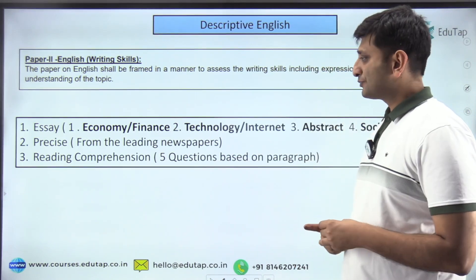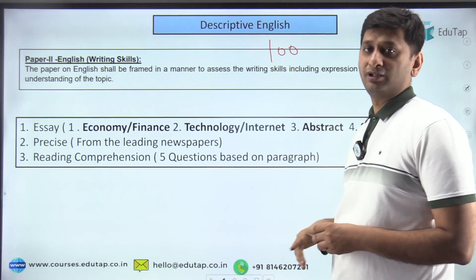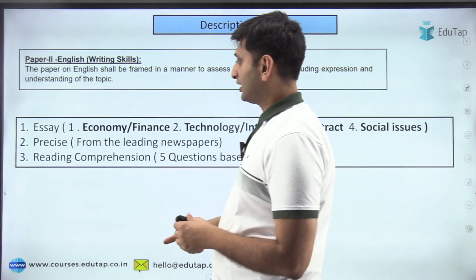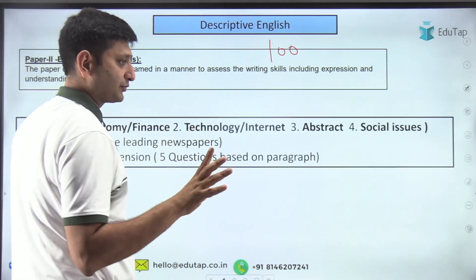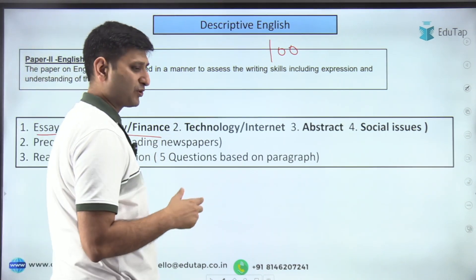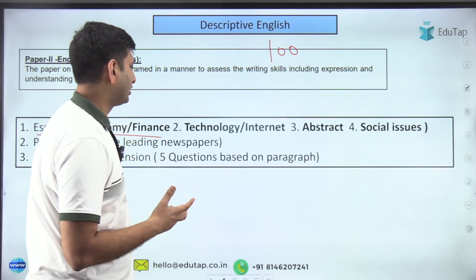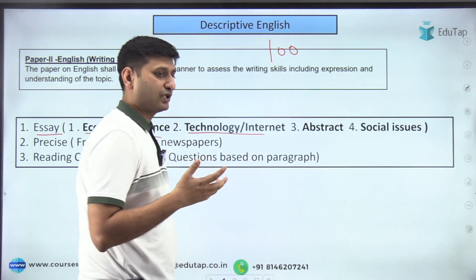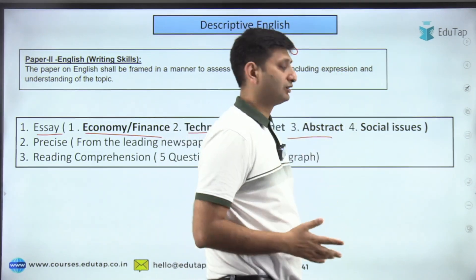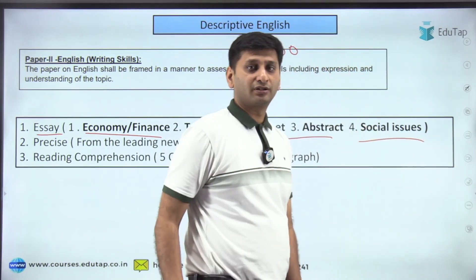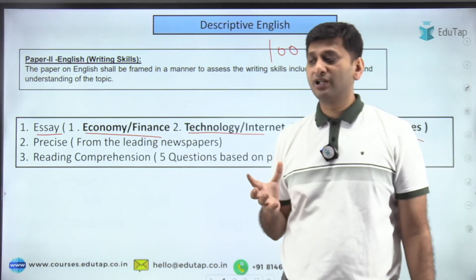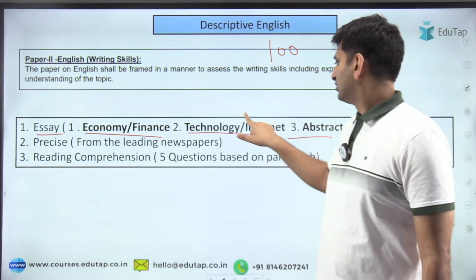For descriptive English in phase two, it is 100 marks and fully descriptive — no syllabus is prescribed. The essay section gives you four choices and you attempt one; essays are generally on economy, finance, technology, or social issues. Precis writing requires summarizing a given passage in your own language. Reading comprehension is similar to what is done in 10th and 12th grade.